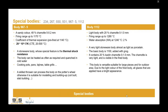Body 1112 is a light body with 20% chamotte 0–1 mm. The firing range goes up to 1280, and at 1240 the water absorption is 2%. It is a very light stoneware body, almost as light as porcelain. A basic body is 1100 with added grog, and it contains 20% kaolin chamotte 0–1 mm. The chamotte is very light and visible in the fired body. This body is versatile, suitable for large pieces and outdoor areas, and due to the light color of the fired body, all glazes applied have a bright appearance.